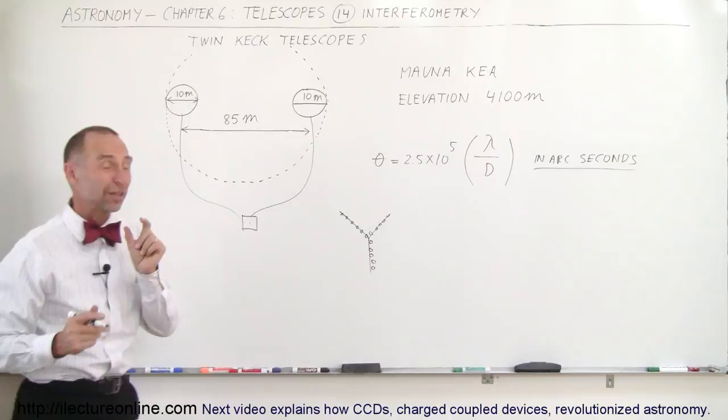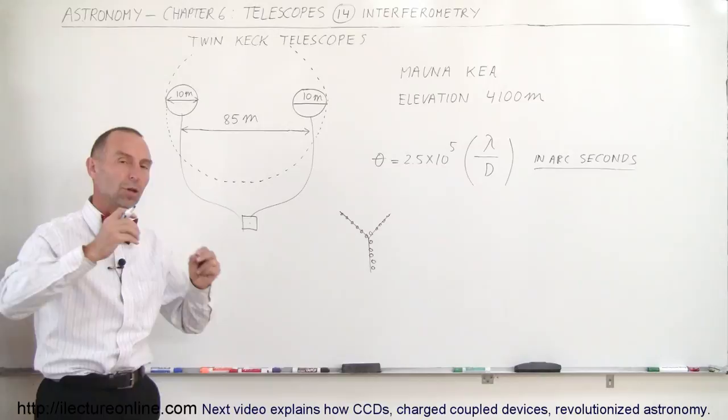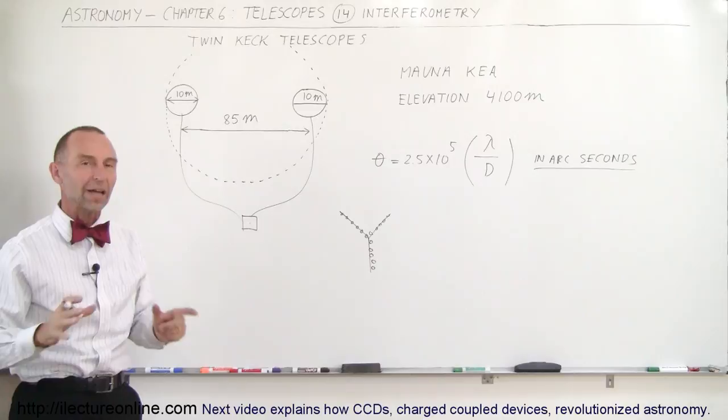Otherwise, radio telescopes have very poor resolution, but by building a system like that where we have multiple radio telescopes spaced apart in different directions, we can kind of mimic one giant radio telescope. Interferometry is one of these great techniques that we use to get the best resolution out of the equipment that we have.